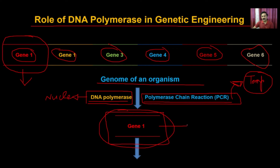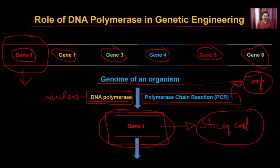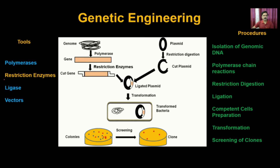Once you use PCR to get the gene, it must be processed further with the next set of enzymes to generate sticky ends so it can be incorporated into the vector. Once you have synthesized the gene of interest, you go through the downstream process using the next set of tools to generate sticky ends. That next set of tools is called restriction enzymes.